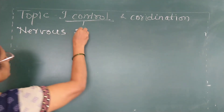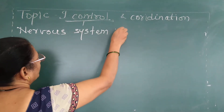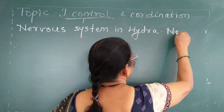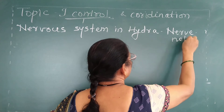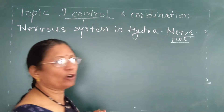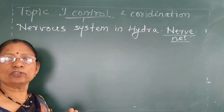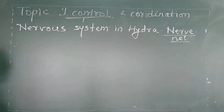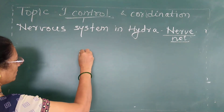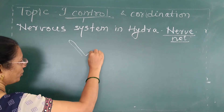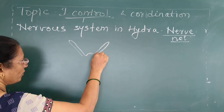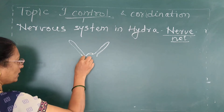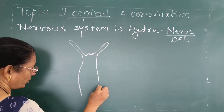The nervous system in hydra includes nerve nets. A nerve net is a network of nerve cells, which are also called neurons. Neurons come together and form a net-like structure. Looking at the body of hydra diagrammatically, it consists of tentacles, a body, and a mouth.